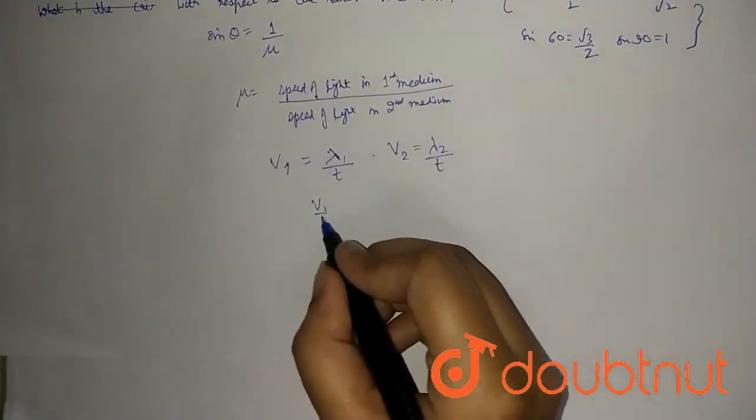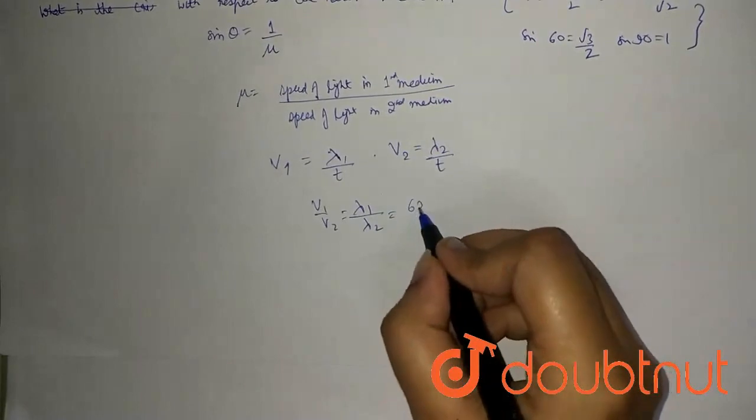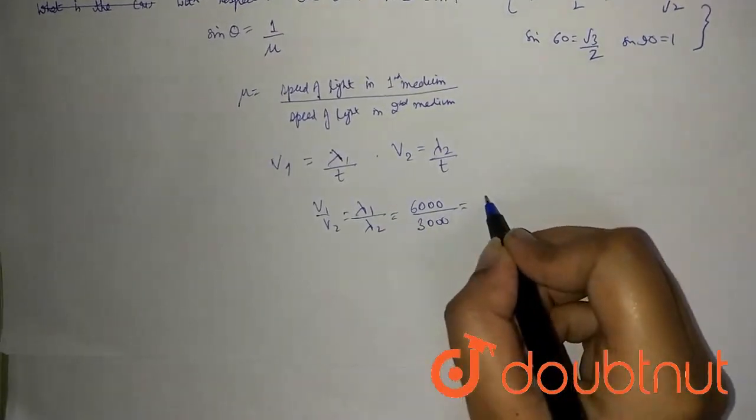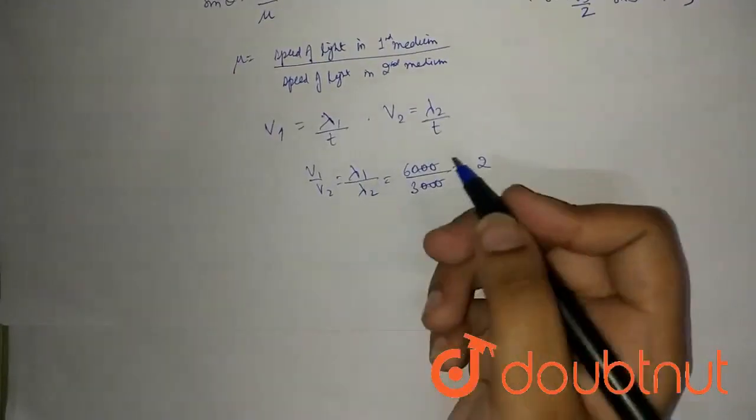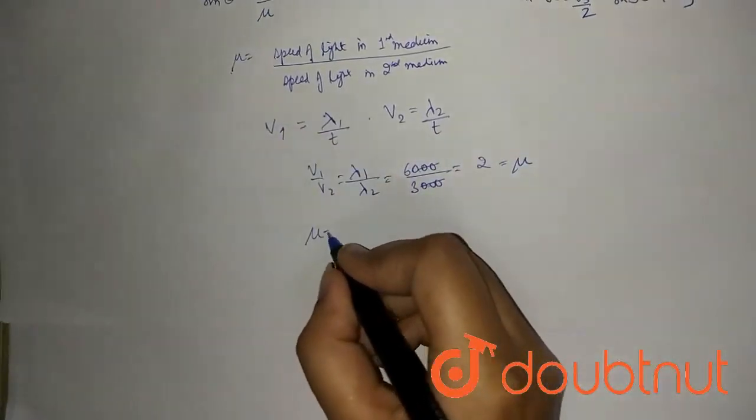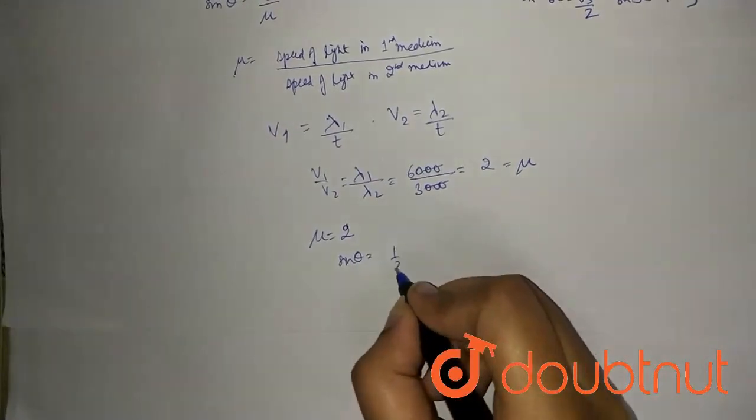If we do v₁ / v₂, we will get λ₁ / λ₂. λ₁ is 6000 and λ₂ is 3000, so we get 2. This equals the refractive index, so the refractive index is 2. Therefore, sin θ = 1/2.